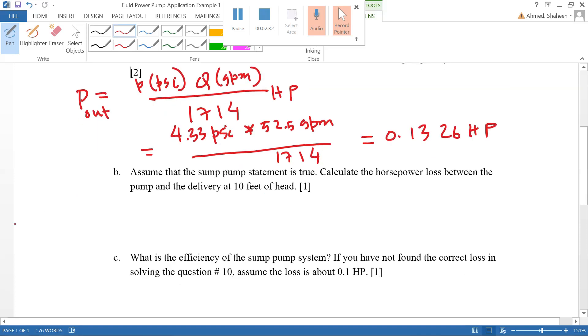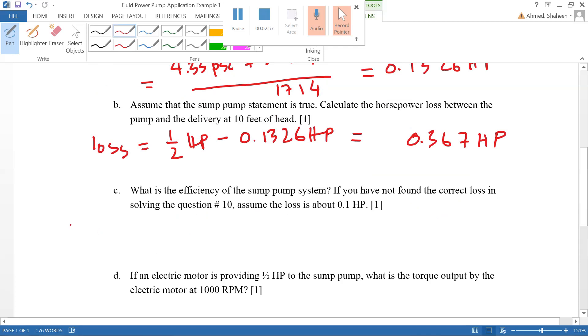Assume the sump pump statement is true. Calculate the horsepower loss. The loss is going to be half horsepower minus what it produces, which is 0.5 minus 0.1326, which is 0.367 horsepower. So mostly everything is lost. Most sump pumps have just one check valve and maybe 10 feet of pipe, a couple of elbows, which has probably no loss compared to the power.